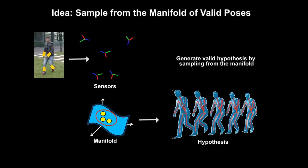The key idea is to sample hypotheses from the manifold of valid poses to reduce the dimensionality of the problem. In contrast to previous works that learned activity-specific manifolds from training data,